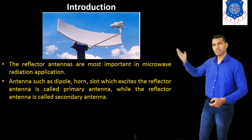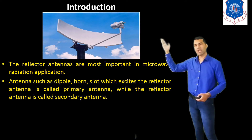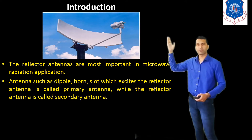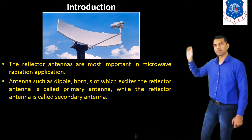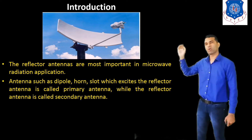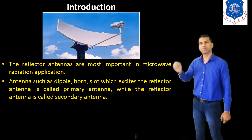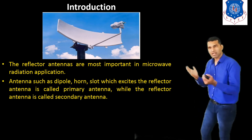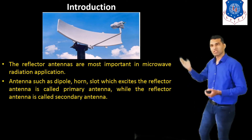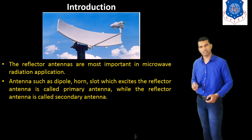Here in this figure, we see the reflector antenna. We can see this is the reflector on the backward side, and in the front side we have the antenna — a simple horn type of antenna. This antenna is known as the primary antenna, while the reflector we have seen in the figure is called the secondary antenna.